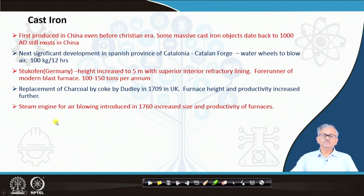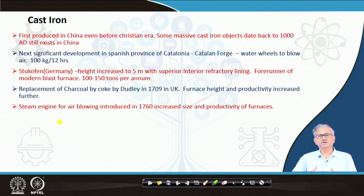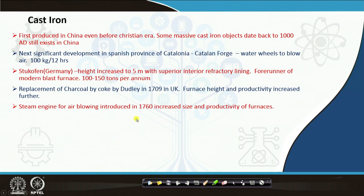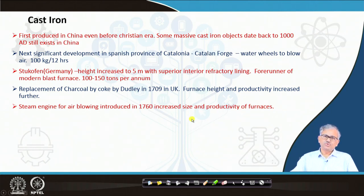Then came the steam engine for blowing air. Water wheels did not have so much power, but a steam engine has much more power so you can deliver much more air per ton of iron, increasing the blast rate. Steam engine air blowing was introduced in 1760, increasing the size and productivity of the furnace.